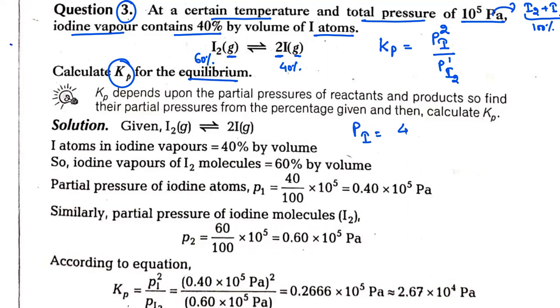How do we do that? 40% of 10 to the power 5. We write 40% as 40 by 100, and the total pressure is 10 to the power 5 pascals. Two zeros cancel, and this gives us 4 times 10 to the power 4 pascals. This is the pressure of iodine atoms.